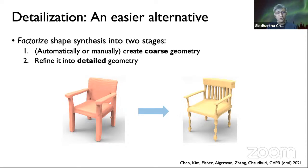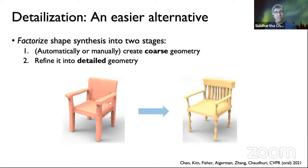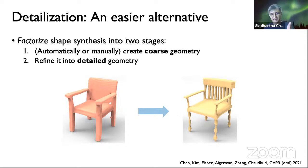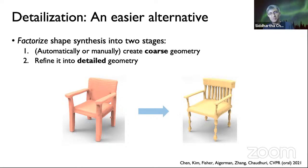The beauty of this approach is that you can use any of many available coarse synthesis methods for the first part, and then detailization methods for the second part. These can be trained independently, jointly, or sequentially — opening up a wide range of design choices. Looking forward, it needn't even be a two-step process; you could continue adding detail in successive refinements, which starts to look a lot like the pyramidal upsampling used in modern GANs for achieving high resolution.